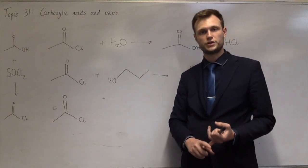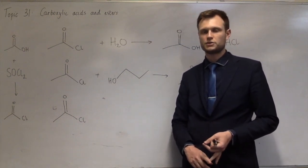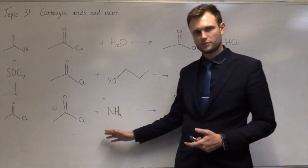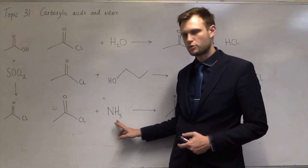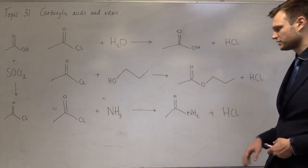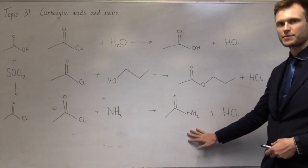Now, these will also react with ammonia, or with any amines, to make amides. And with ammonia, it's very similar to the last one. You lose a H from the ammonia and a Cl from the acid chloride to make HCl. And then you also end up with this, which is a primary amide.